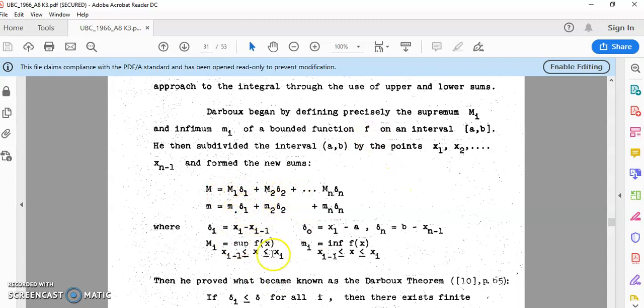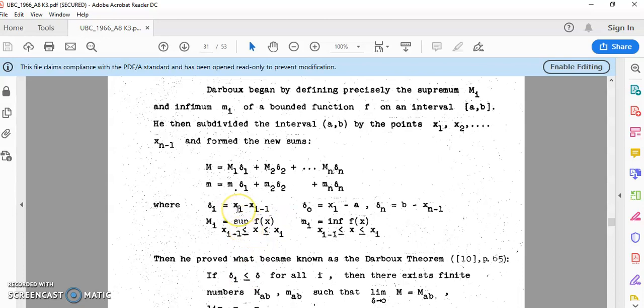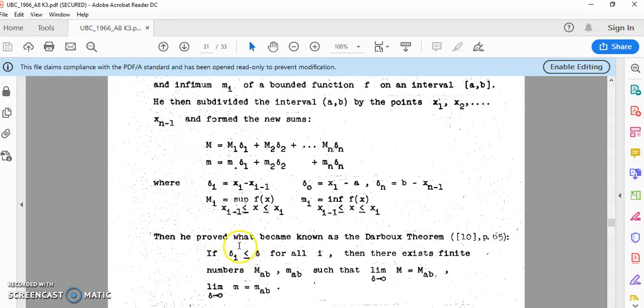In his definition, he defined the upper limit to be M and the lower limit to be this sum here. By the way, this is exactly a sum of rectangles, which is what Riemann did. And these little deltas are just the intervals between the chosen points, x₁, x₂, xₙ₋₁, etc.